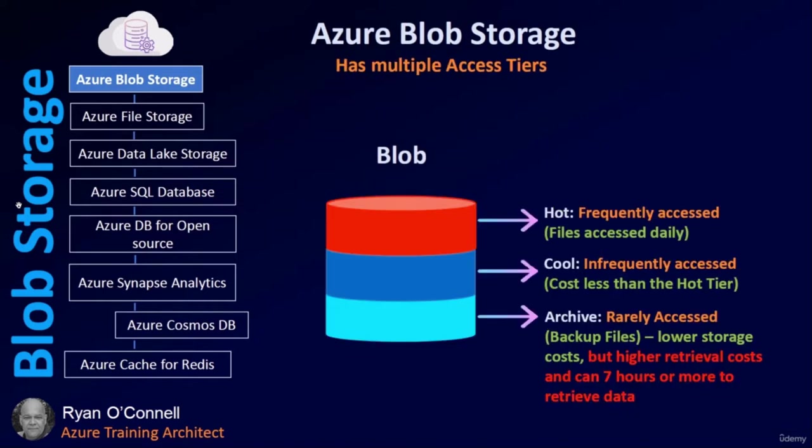Azure Blob Storage has multiple access tiers: hot, cool, and archive. The hot tier is for frequently accessed data — files you access daily. The cool tier is for infrequent access and costs less than hot. Archive is rarely accessed, great for backups, with lower storage costs but higher retrieval costs and retrieval times of seven hours or more.